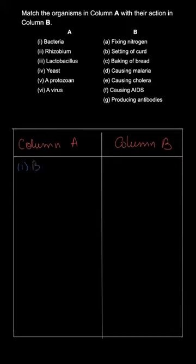So first of all, we'll make a column here, column A and column B. In column A we have the first one, that's the bacteria and its action is causing cholera.